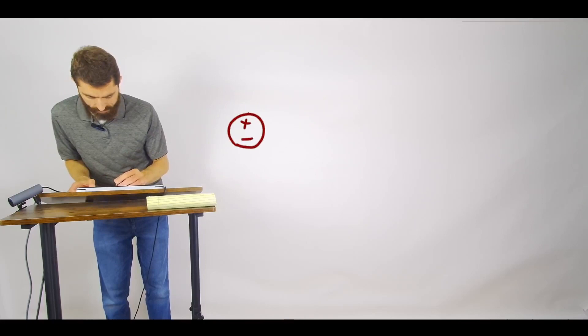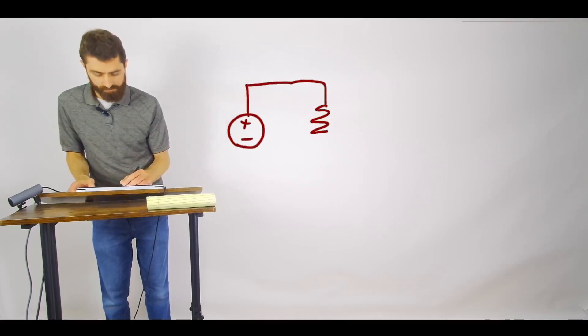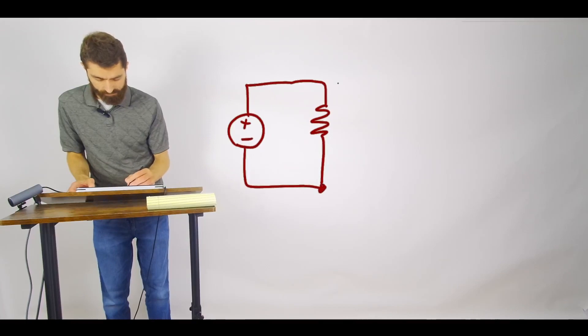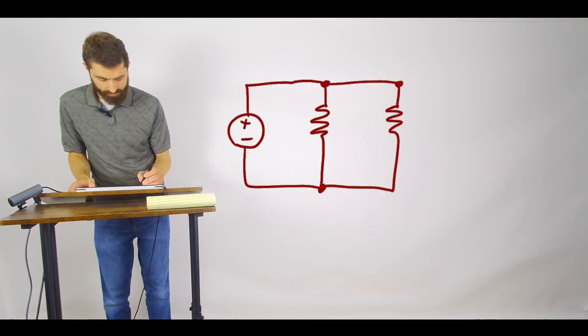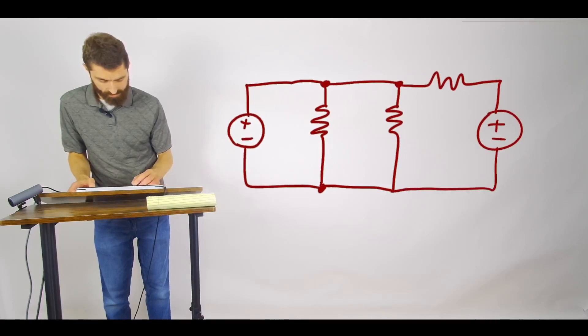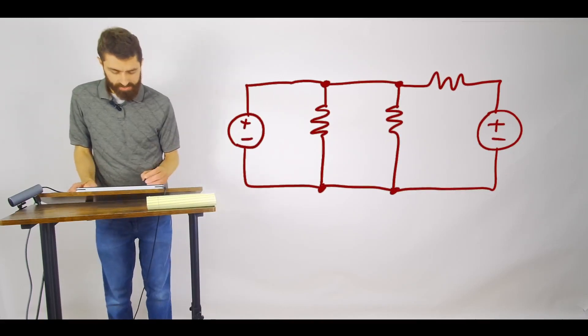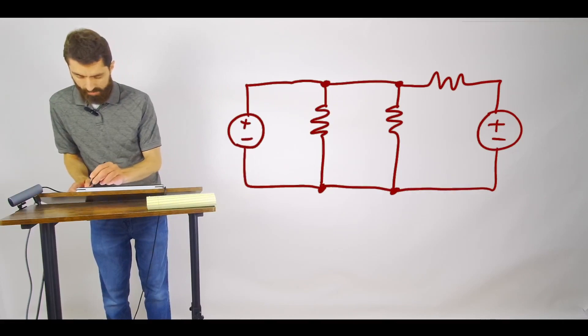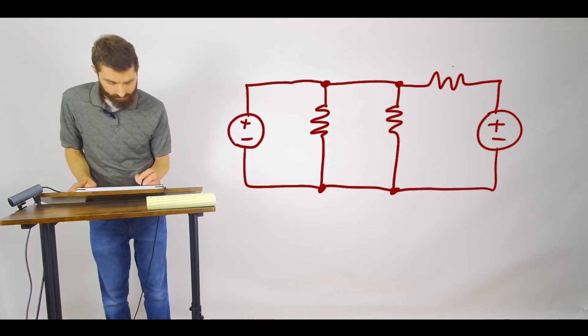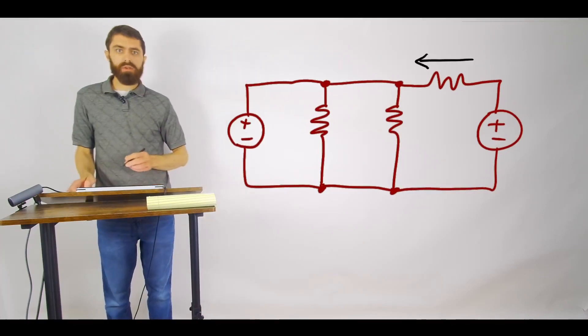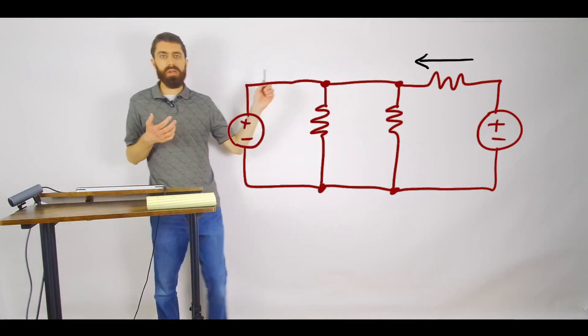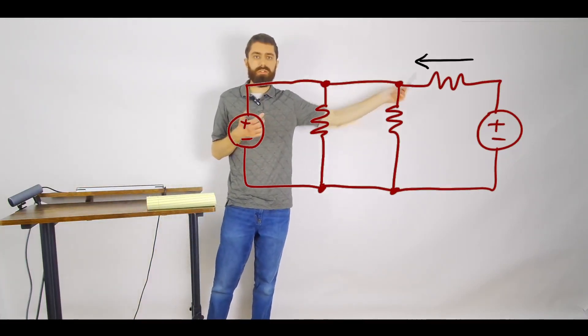So let's say you have a voltage source here. I'm just drawing kind of a random circuit here. Let's say we have two volt sources. And let's say you wanted to solve for the current flowing through this resistor. And let's say you actually don't know what direction it's going to be because you haven't solved for it yet.